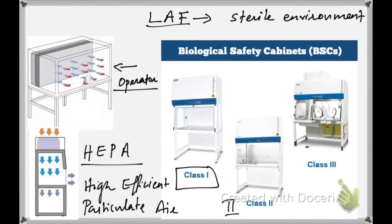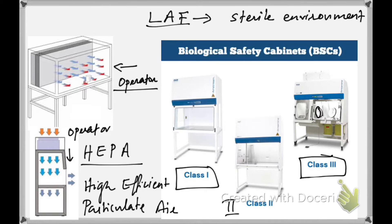In Class 2, the HEPA filter system is kept at the top and the movement of air is from top to bottom. This gives more protection to the operator and moderate protection to the culture. Class 3 provides maximum protection — there are special gloves attached to the laminar air flow hood, allowing the operator to insert their arms inside and work over the cabinet, giving complete protection to both operator and culture.